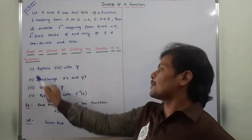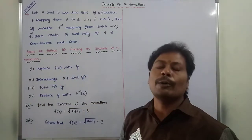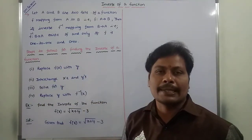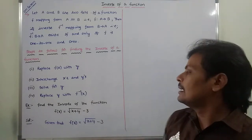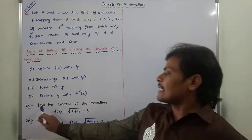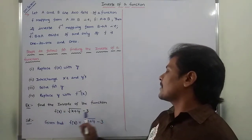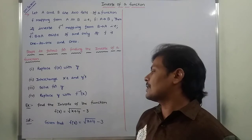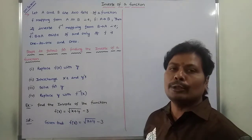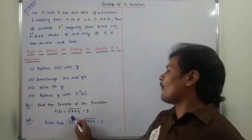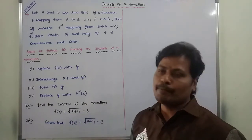These are the steps we have to follow for finding the inverse of a given function. Example problem: find the inverse of the given function F of X is equal to the square root of (X plus 4) minus 3.